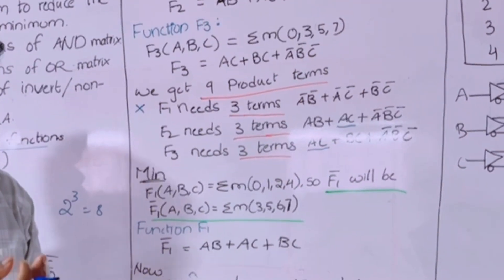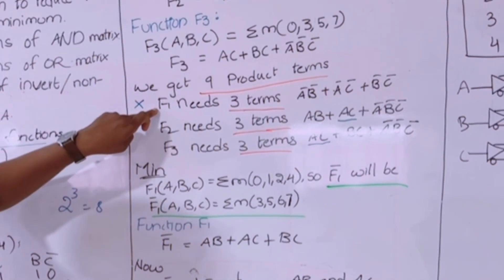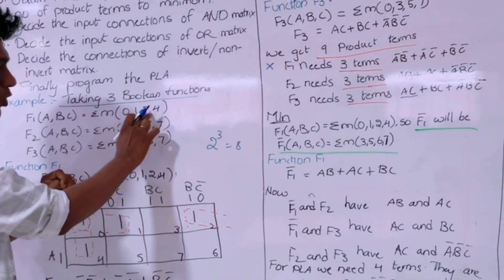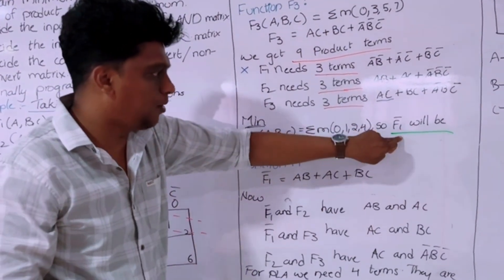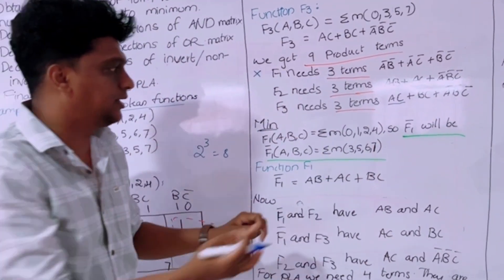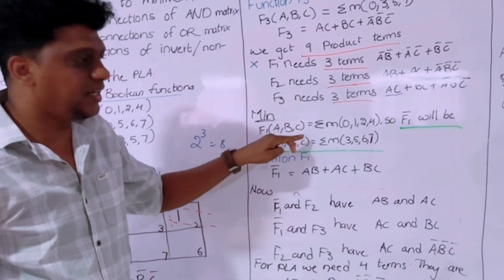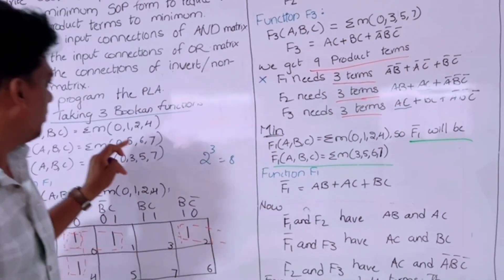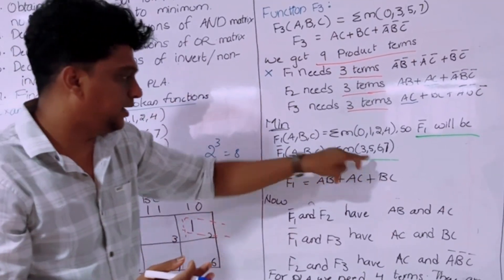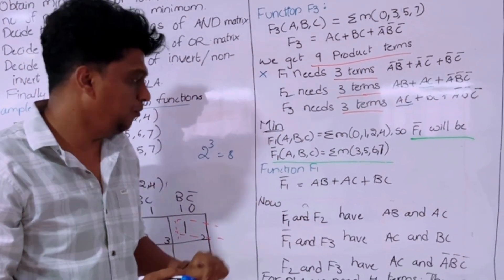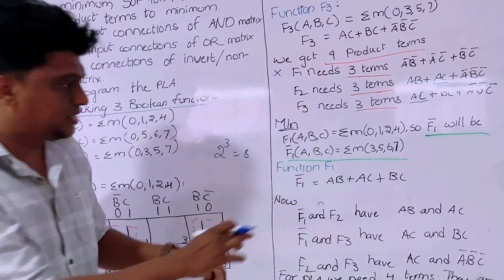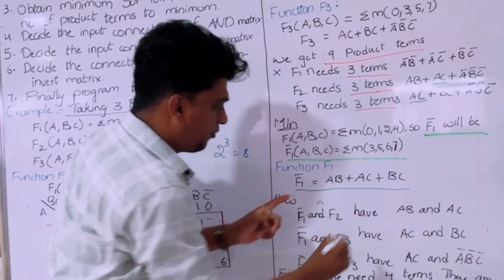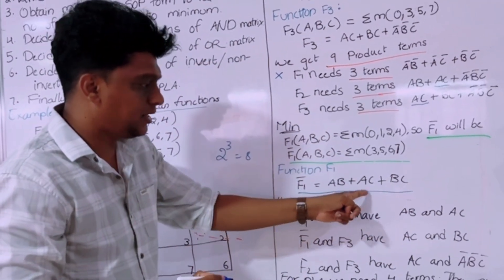Since F1 has no common terms, we take the complement of F1. Generally F1 is the summation M of 0, 1, 2, 4. When we write F1-bar we write the remaining terms: 3, 5, 6, 7 — because it is a three-variable K-map, terms go from 0 to 7. Now we implement the K-map and simplify summation M of 3, 5, 6, 7, and we get the output: F1-bar equals AB plus AC plus BC.